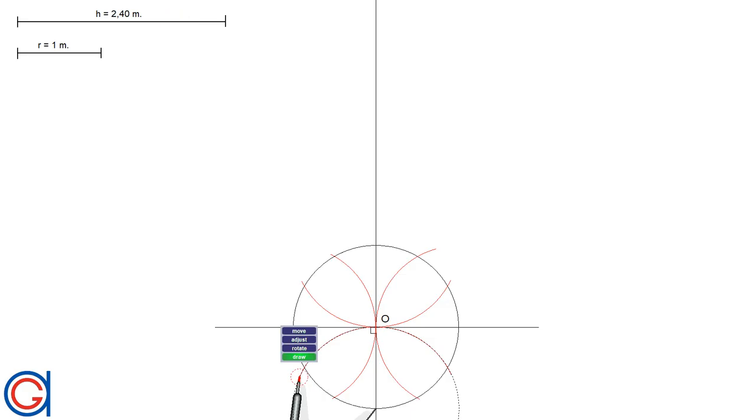We number each division from 1 to 12 as can be seen here. Number one is going to be the first step of our spiral staircase and so on until the final step 11. 0 is the ground floor and 12 is the next floor.